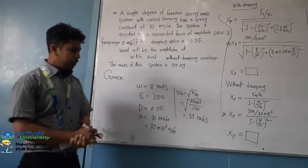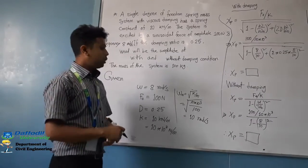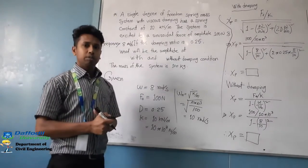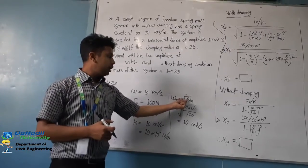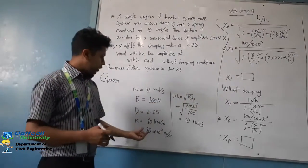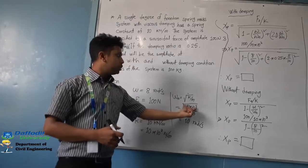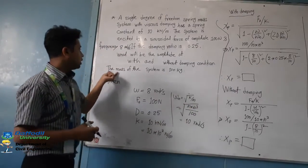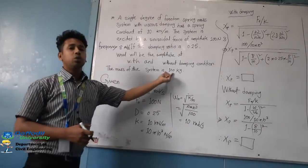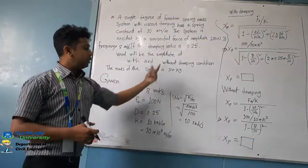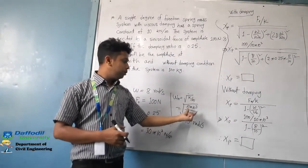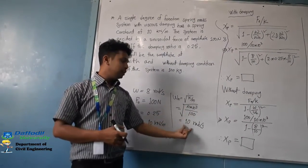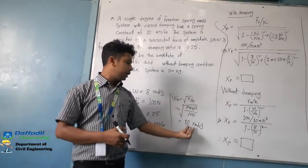In this equation, we have to find the natural frequency omega_n equal to square root of k divided by m. So we have to find k divided by m. The mass of the spring system is 100 kg.